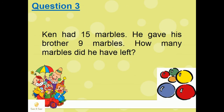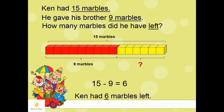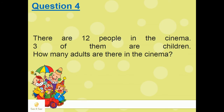Here is question 3. Ken had 15 marbles. He gave his brother 9 marbles. How many marbles did he have left? Similarly, use multilink cubes to guide the students. Here is question 4. There are 12 people in the cinema; 3 of them are children. How many adults are there in the cinema?